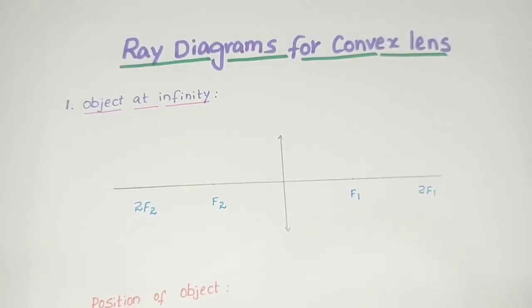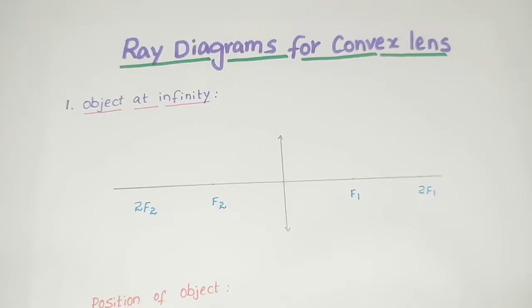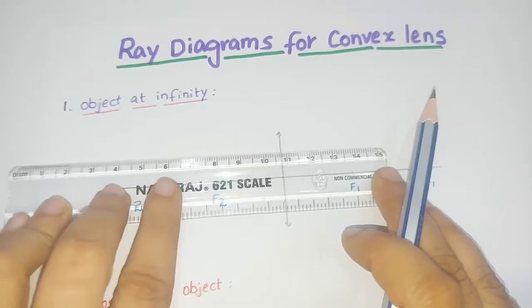Hi everyone. In this video we are going to discuss the ray diagrams for convex lenses. A convex lens can form both real and virtual images. There are totally six situations for ray diagrams of a convex lens. Let us discuss them one by one. The first one is when the object is at infinity.